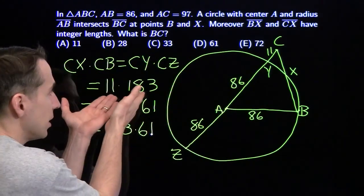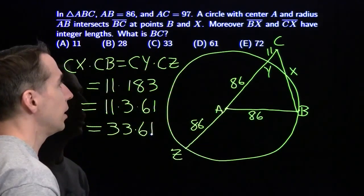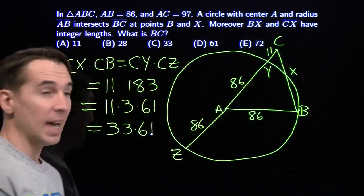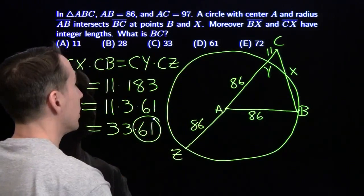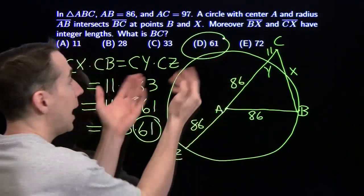The only way we can write this as the product of two integers where both integers are less than 183. We know that BC has to be the larger of the two. It's right there. It's 61. And we're done.